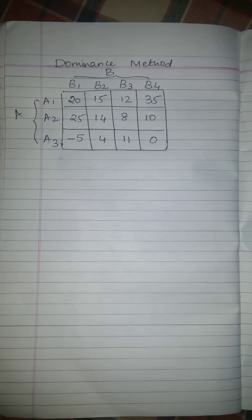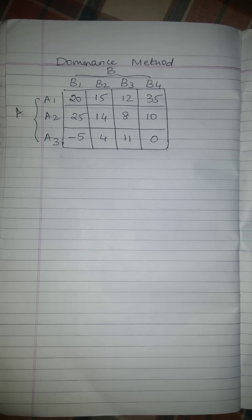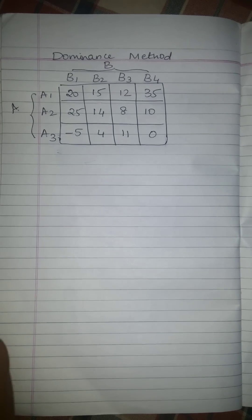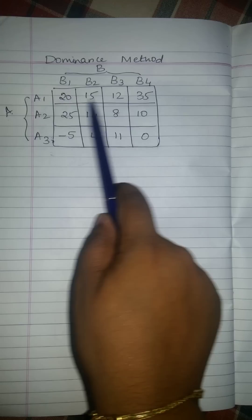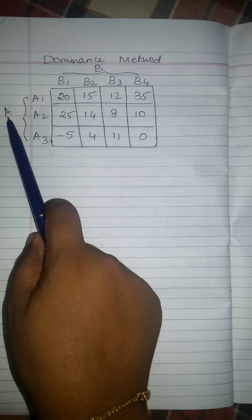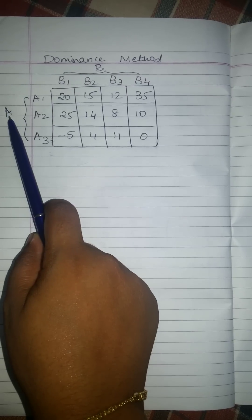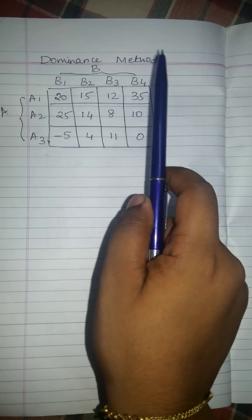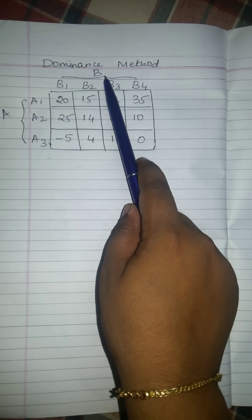Good evening friends. Today I am going to show about dominance method. Dominance method is such that the row value, here it is A, will try to retain the maximum value at the end of the problem, and B will try to retain the minimum value at the end of the problem.